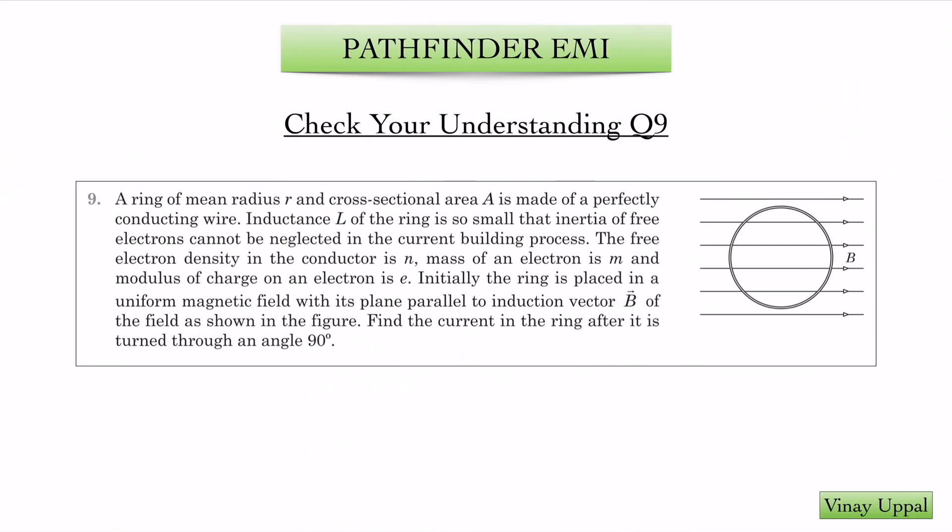I am just going to read this aloud. A ring of mean radius r and cross sectional area A is made up of perfectly conducting wire. Perfectly conducting wire means that the resistance is 0. Inductance L of the ring is so small that the inertia of free electrons cannot be neglected in the current building process. That means the kinetic inductance cannot be taken as negligible because the inertia of the electrons contributes to the kinetic inductance. The free electron density in the conductor is n, mass of an electron is m, and the modulus of charge on an electron is e.